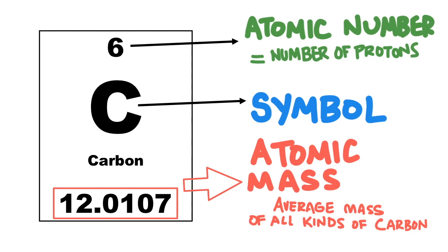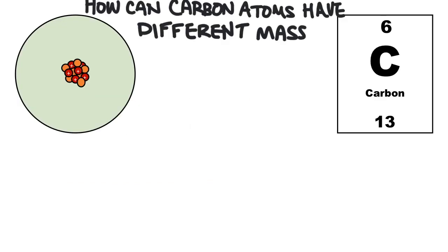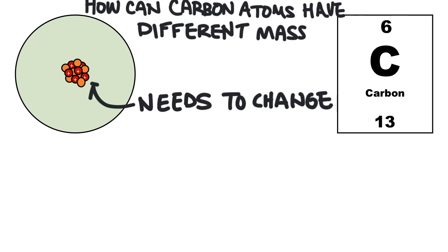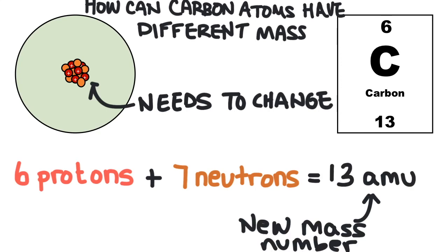How can carbon atoms have different masses? Well, the number of things in the nucleus would have to change. Since only protons and neutrons have mass, you would have to change the number of those particles. So if you added an extra neutron so that carbon has seven neutrons instead of six neutrons, the carbon would have a new mass number.